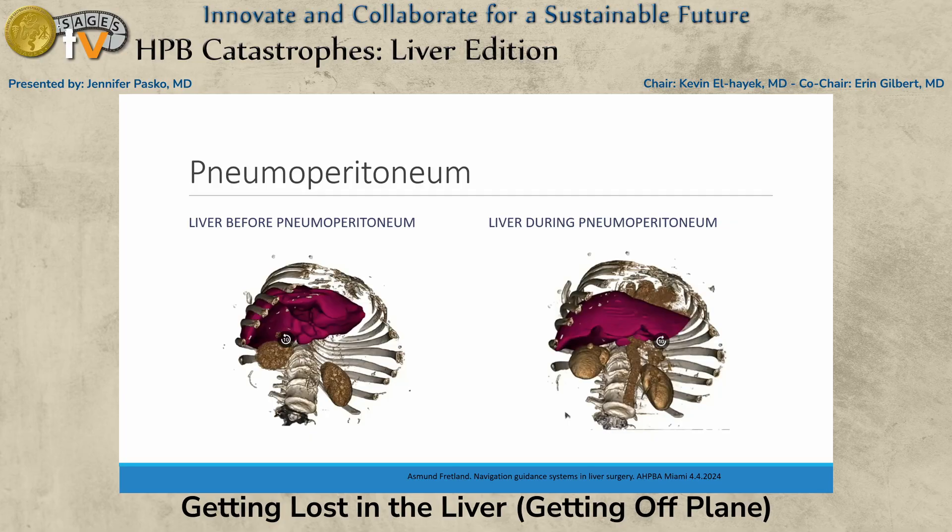I recently went to AHPBA and borrowed this fascinating slide showing CT reconstruction of the liver. When you compare an open patient on CT scan to pneumoperitoneum, you can see the liver actually folds down. You're going to have to lift the liver to get the same view you have as an open surgeon.